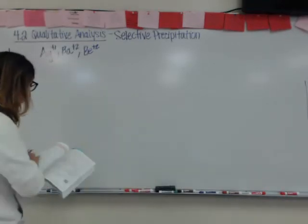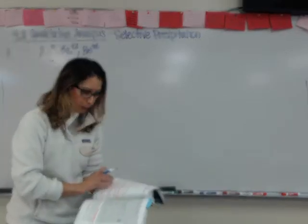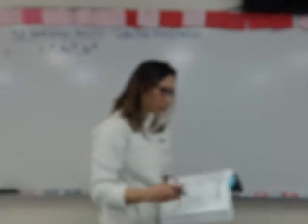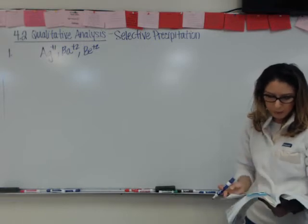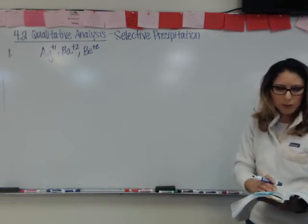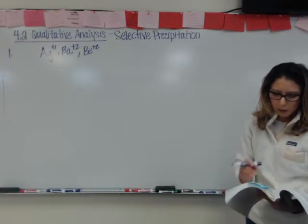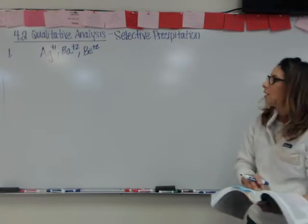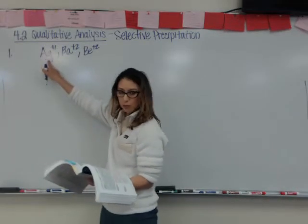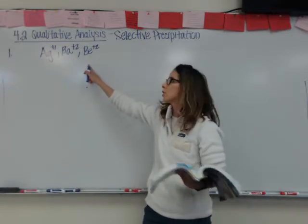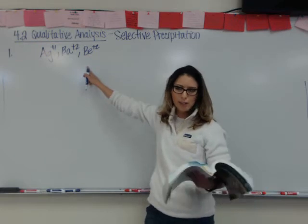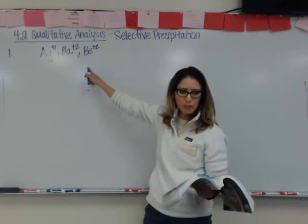If you take a look at the solubility rules, look at which ion you could remove by adding something else. Looking at the chlorides, about a quarter of the way down, they're soluble with most cations unless it's silver. The other two ions aren't listed there, which means we can selectively pull out the silver ion by adding a solution that contains a chloride ion.